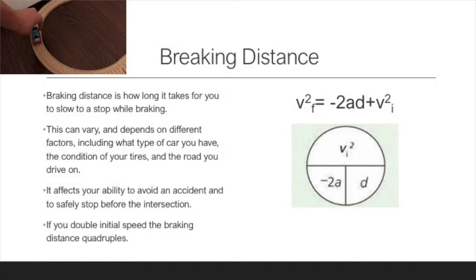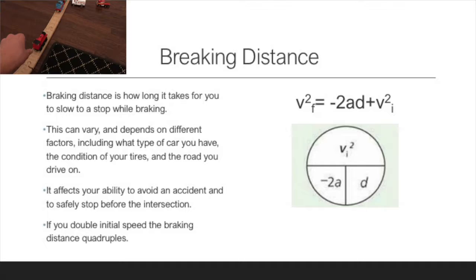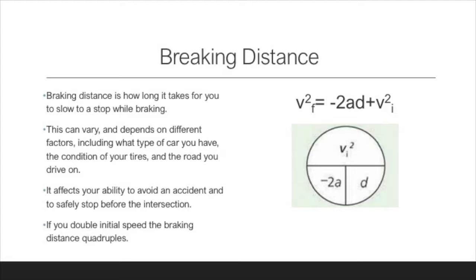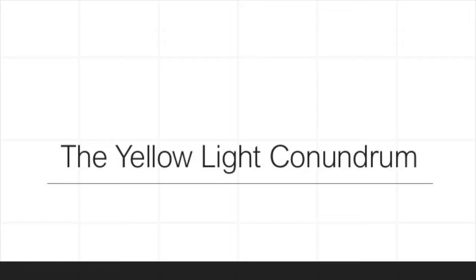Braking distance is how long it takes you to slow to a stop while braking. This can vary and depends on different factors, including what type of car you have, the condition of your tires, and the road you drive on. It affects your ability to avoid an accident and safely stop before the intersection. If you double the initial speed, the braking distance quadruples.